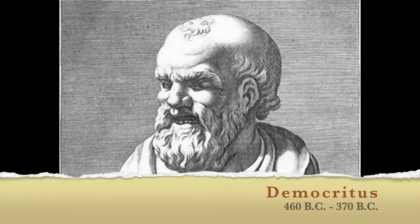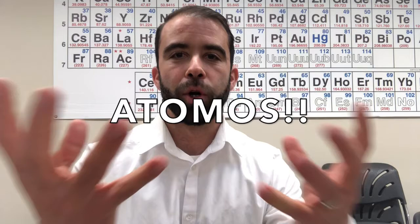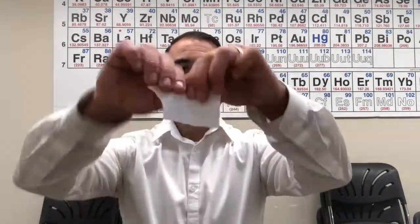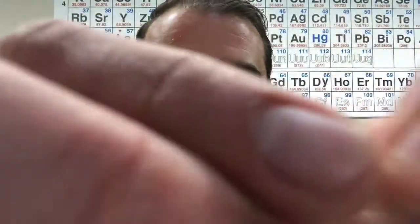First there was this guy named Democritus. One of his major accomplishments, what he's really known for in chemistry, is his theory of atomos. The theory is: if you take something — like a piece of paper — and you cut it in half, again and again and again, until all you have is a tiny tiny piece of paper, eventually you will get to the point where you can't cut that object anymore.